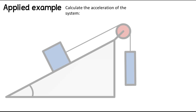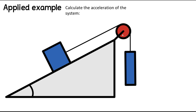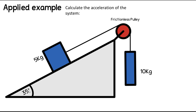Now we'll move on to a slightly more advanced example. Here we have an inclined plane with a pulley attached to the top, and two masses attached to a piece of string that runs over the frictionless pulley. The question is: calculate the acceleration of the system. One mass is 10 kilograms, the other is 5 kilograms, and the angle of the slope is 35 degrees.